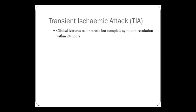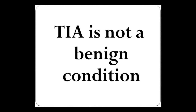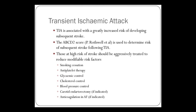Transient ischemic attack — the underlying pathology is exactly the same as stroke. You get a disruption in the vascular supply of a part of the brain causing the same clinical features, but the WHO definition is that you have complete resolution of the symptoms within 24 hours. If there's one thing you remember about TIA: TIA is not a benign condition. Having a TIA greatly increases your risk of having a full-blown stroke. The ABCD2 score helps identify people at risk, telling you their risk of having a stroke and how aggressively you need to manage it.